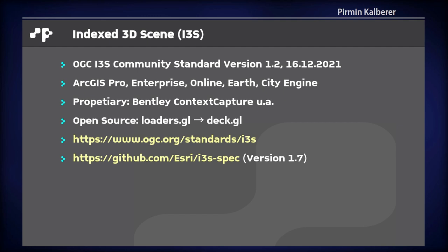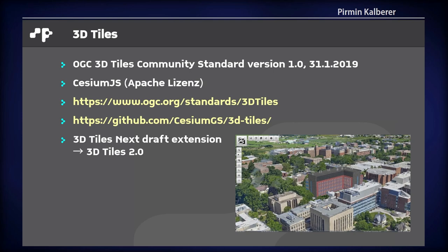The i3s standard is in version 1.2, supported by ArcGIS and so on. It started with CityEngine and has other implementations outside of Esri, including open source readers. You can load them with Loaders.GL and display them with DeckGL. The second standard I'm talking about is 3D Tiles from Cesium — Cesium is a company. I'm not connected to the company; I'm on the cesium.org side. It became a standard in 2019. They published Cesium.js alongside it, which is a viewer for displaying 3D tiles. There is also a 3D Tiles Next draft extension, which should become 3D Tiles 2.0 as an OGC standard.